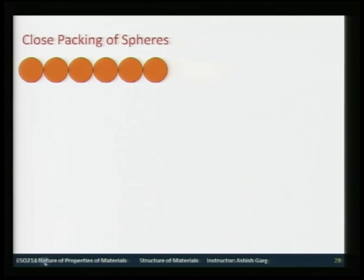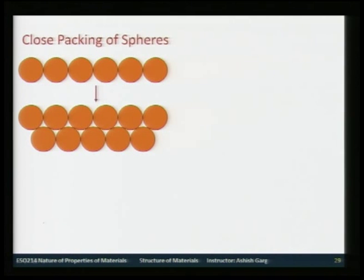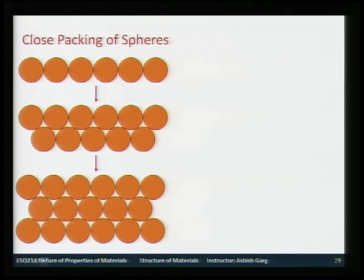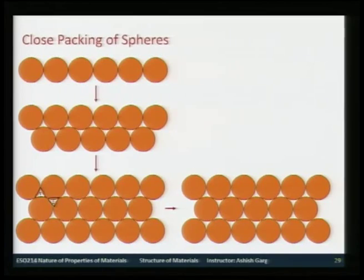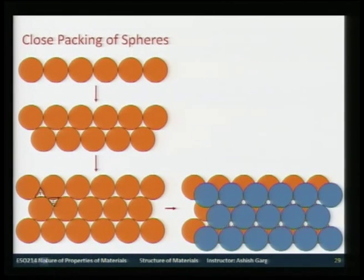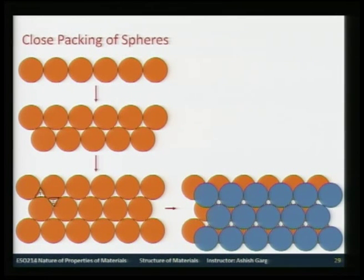We discussed the closest form of packing where atoms pack so that in one layer the second layer touches the first to maximize the number of nearest neighbors. There are two kinds of interstices: top-pointed triangles and bottom-pointed triangles. The second layer can go on top of either type, but cannot cover both simultaneously.